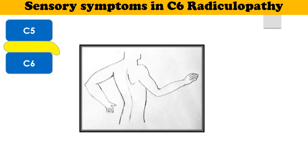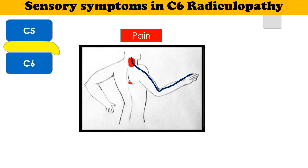The radicular pain starts from the neck and reaches the thumb and index finger. The pain of C6 Radiculopathy is perceived in the neck, medial scapula, and lateral forearm.